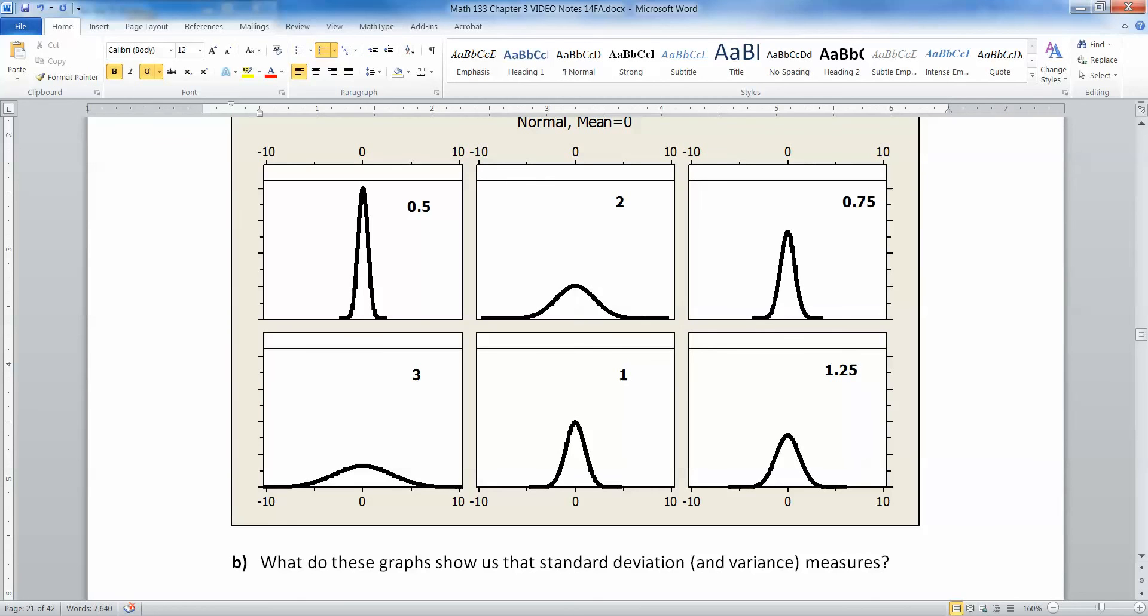This one would have a variance of 9, because 3 squared is 9. This one would have a variance of 0.25, very, very small.